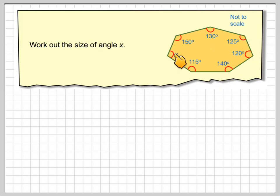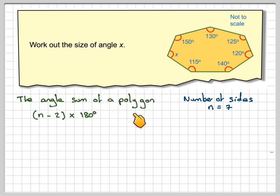It says not to scale, so we've got to work out the size of this angle here. So the number of sides, n, is equal to 7. For any polygon, the sum of the angles,